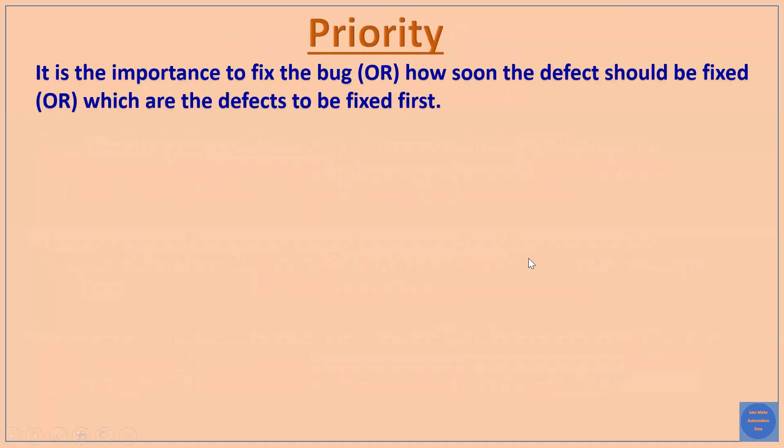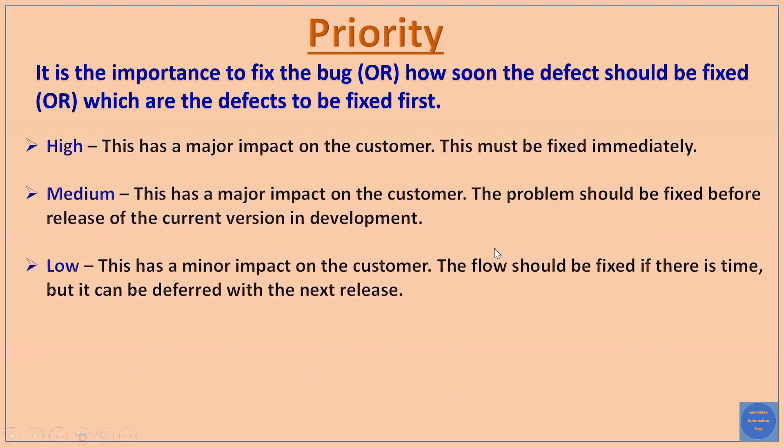The second concept is priority. Priority tells us the importance of fixing a bug — how soon a defect should be fixed and which defects should be fixed first. So priority decides how important and how soon we should fix the bug.